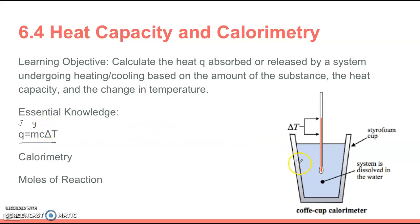Water is a common one that we have to work with. That number will be given to you: 4.18 joules per gram degree Celsius. That's specific heat. Delta T is your change in temperature. Things with larger specific heats have smaller changes in temperature in general.